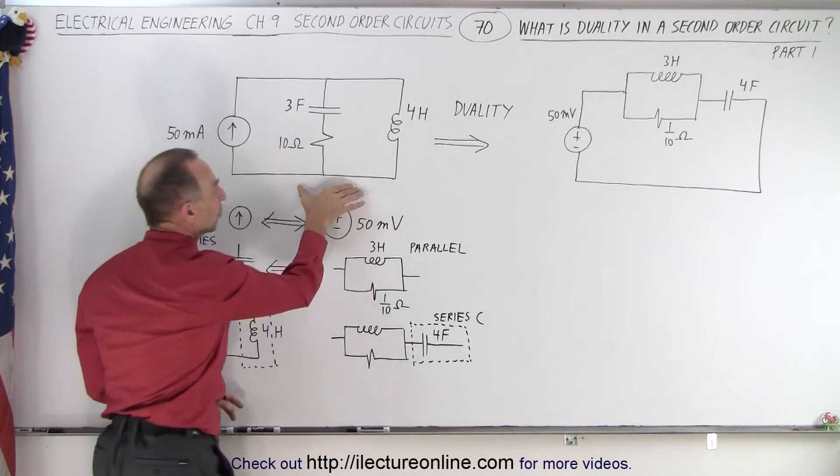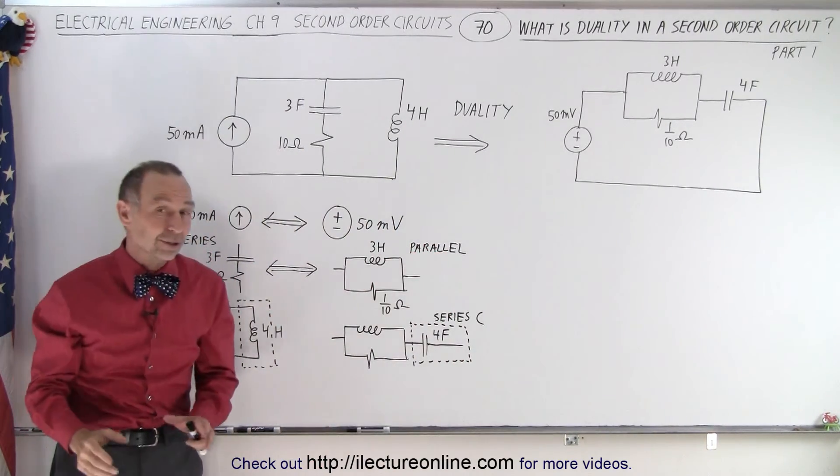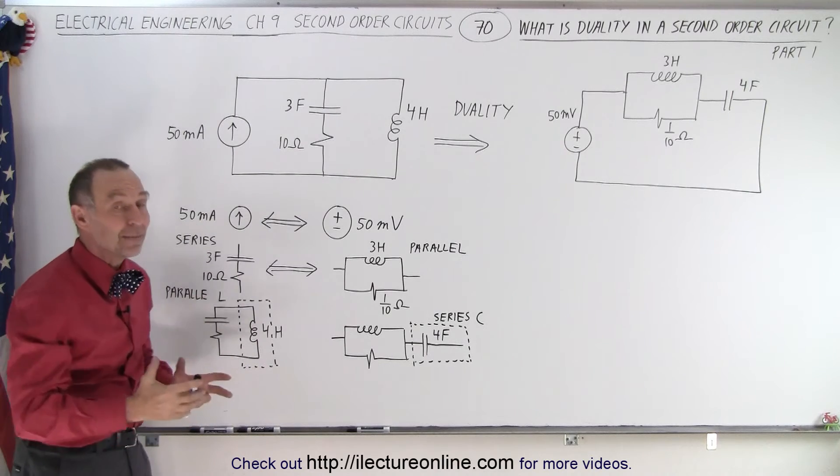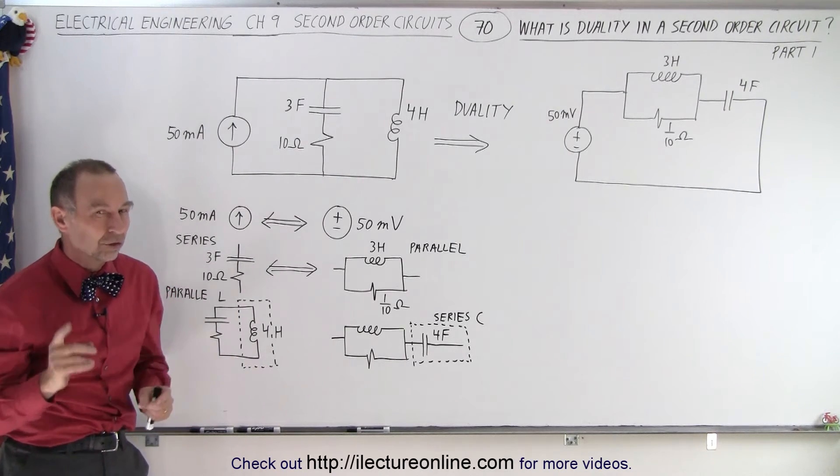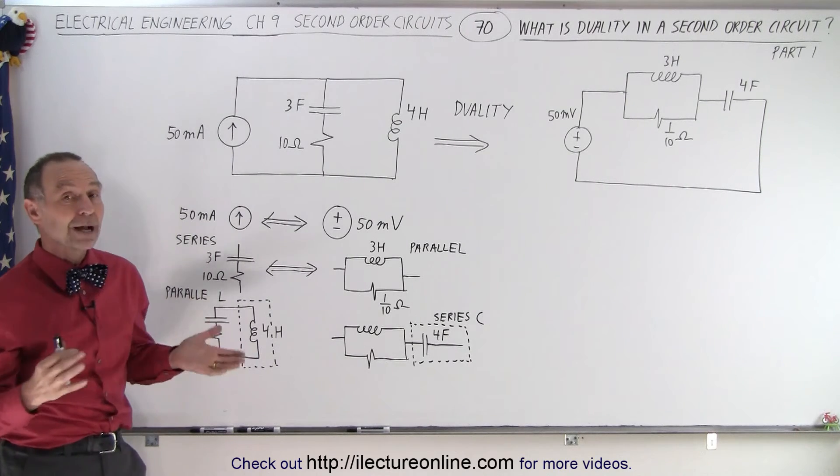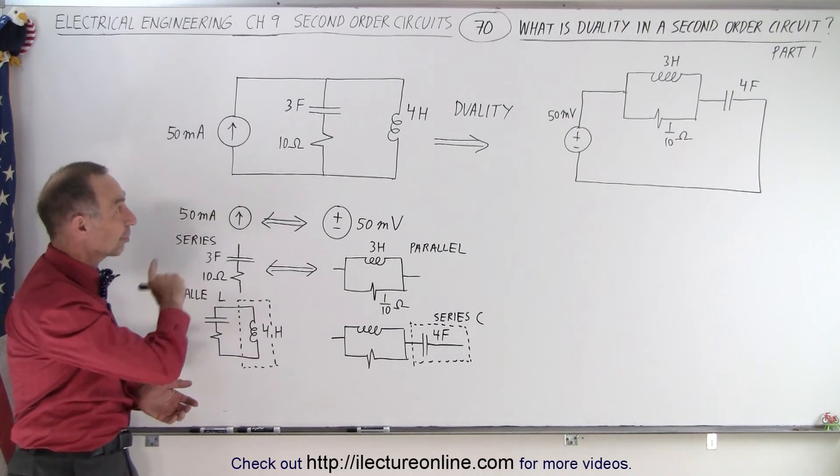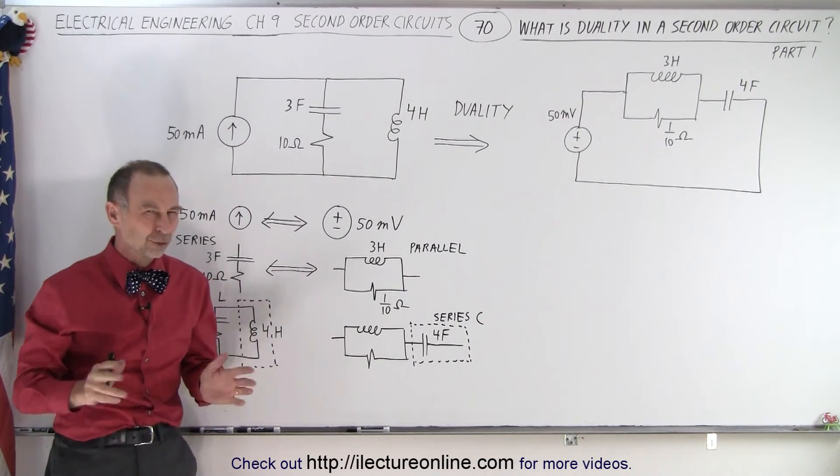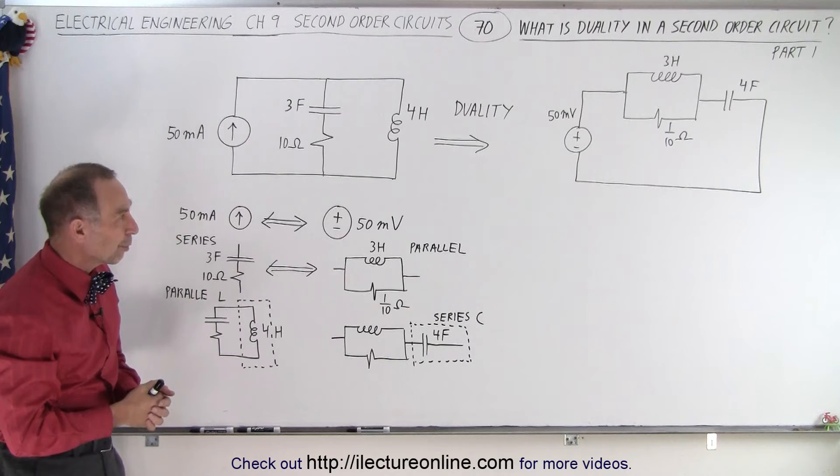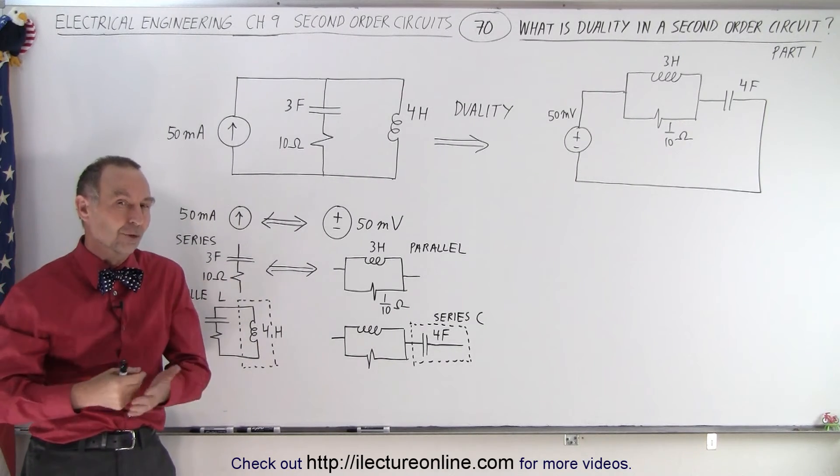When we do all that we go from this circuit to this circuit and we have what we call the duality circuit. And we end up with the same equation results. And we'll show that in the next videos how that works. But that is what we mean by duality. And this is the process that we follow to go from one type of circuit to another type of circuit. We'll show you some examples so you get a little bit more of a feel for it. But that's what we mean by duality in second order circuits.